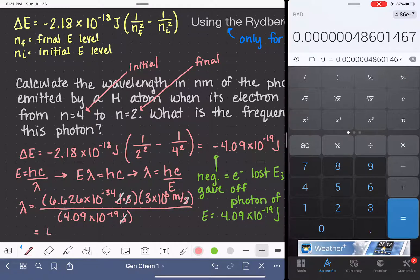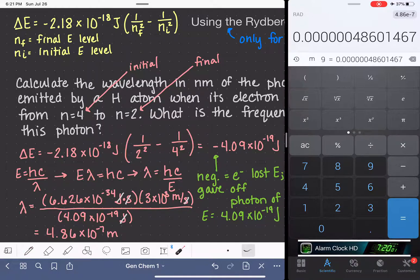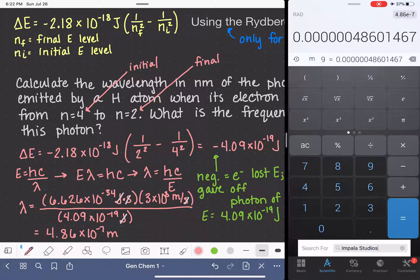Divided by 4.09 times 10 to the negative 19. So this is 4.86 times 10 to the negative 7 meters. Our unit is meters. Now the problem is asking us to calculate our wavelength in nanometers, which is a much more logical unit because this looks like it's very small. So what we're going to do here is a nanometer to meter conversion.